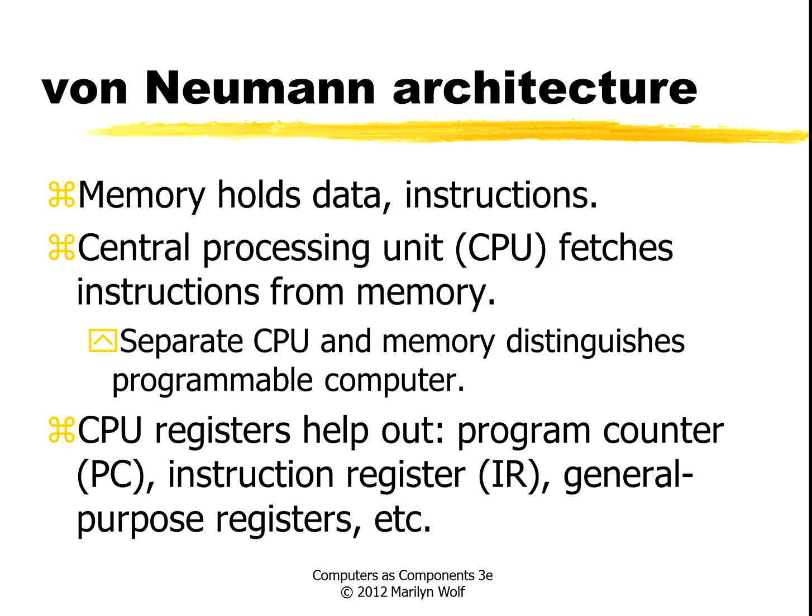CPUs have several types of registers to help out. The program counter, or PC, holds the location in memory for the current instruction. The instruction register, or IR, holds a copy of the current instruction. There may also be some general purpose registers and some special purpose registers.